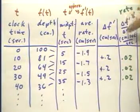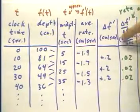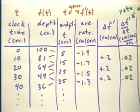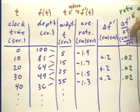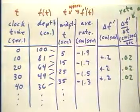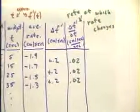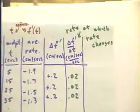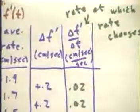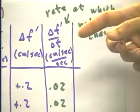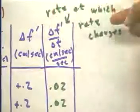Because, remember, we're dividing centimeters per second by seconds. We're going to get centimeters per second over seconds. That unit, incidentally, simplifies to centimeters over seconds squared, but we're not going to worry too much about that. And we see that this is the rate at which the rate changes. Because we're taking the change in a rate and dividing by the clock time, we're getting a rate at which the rate f prime changes.